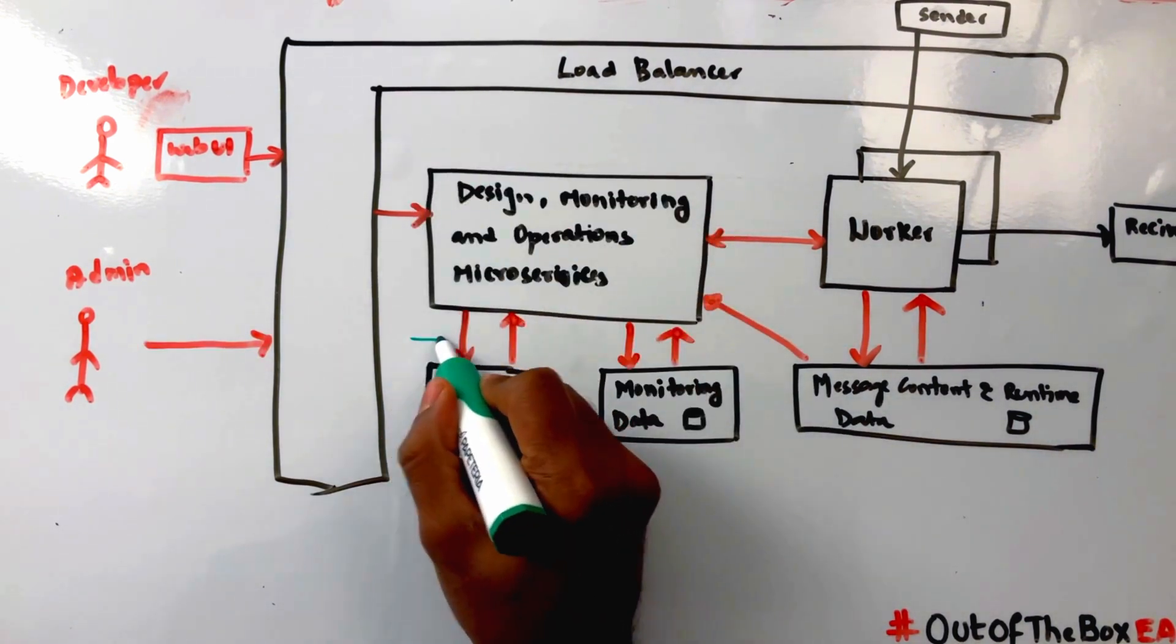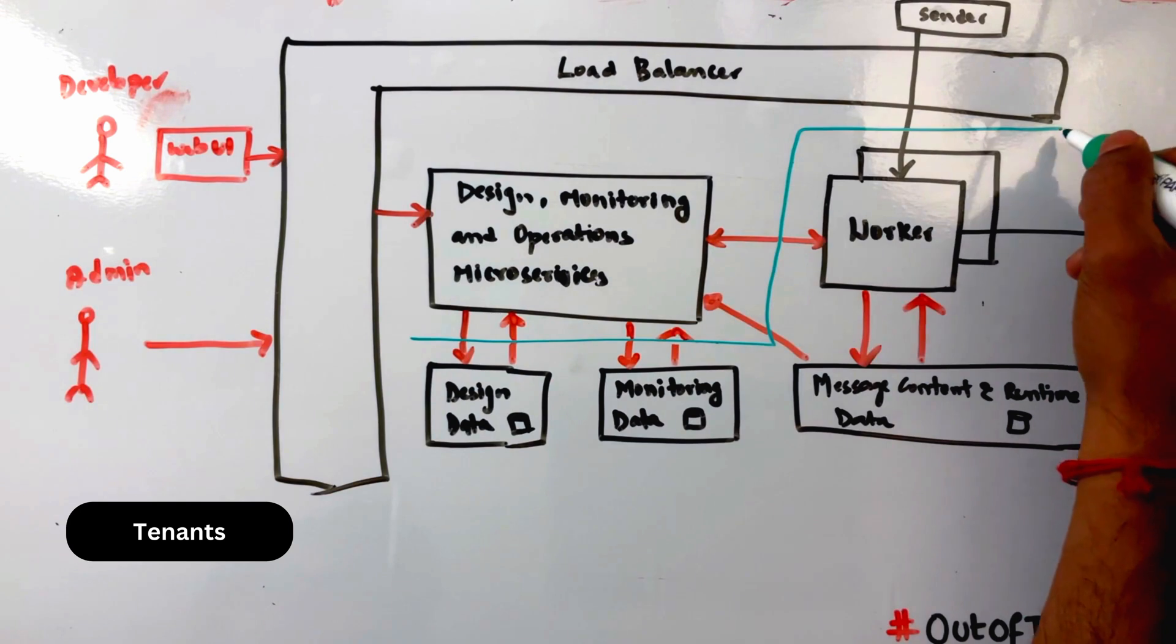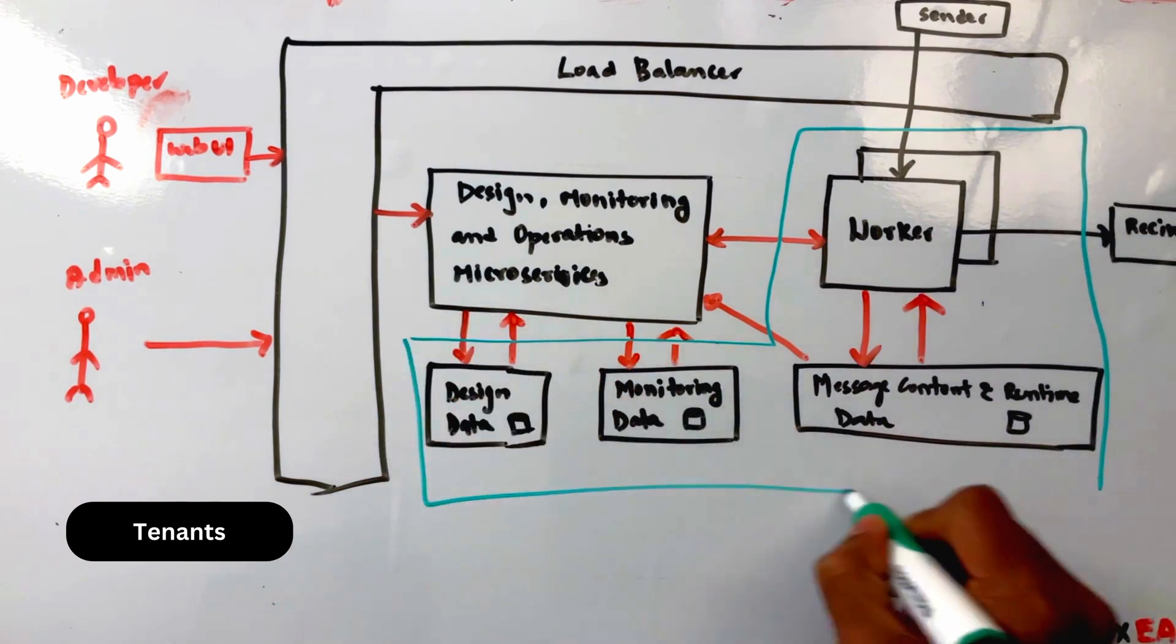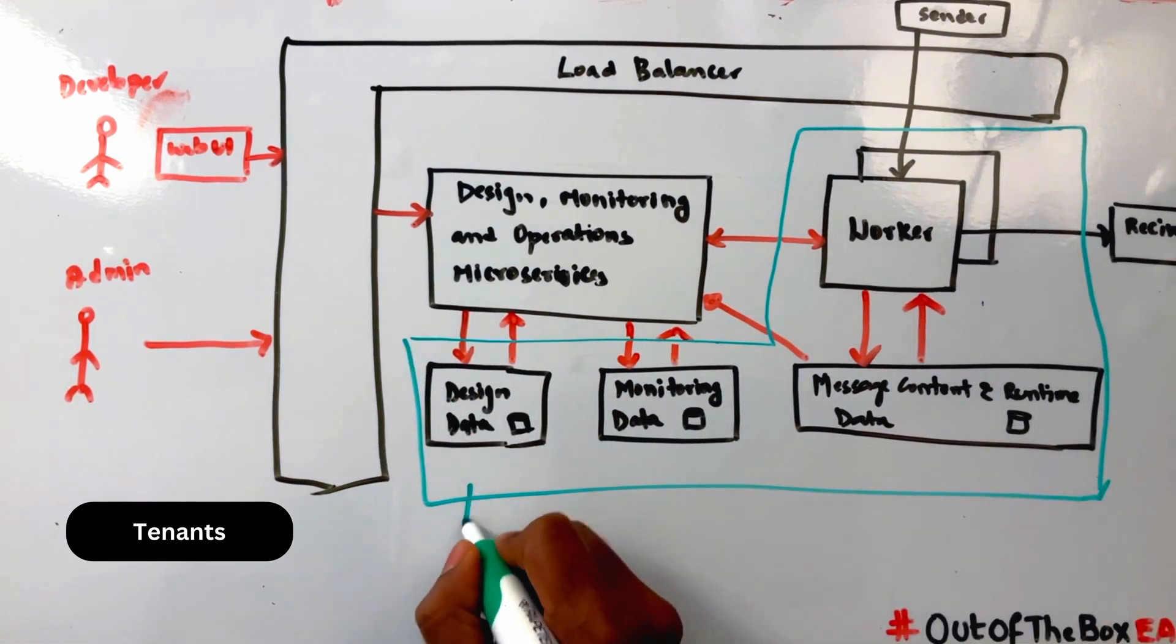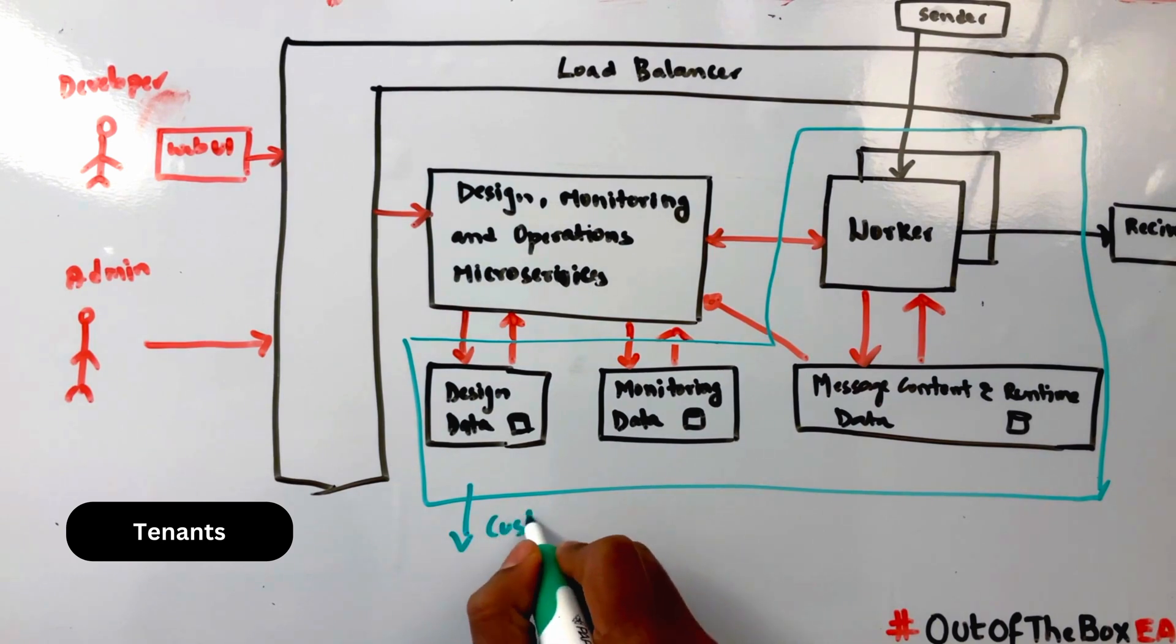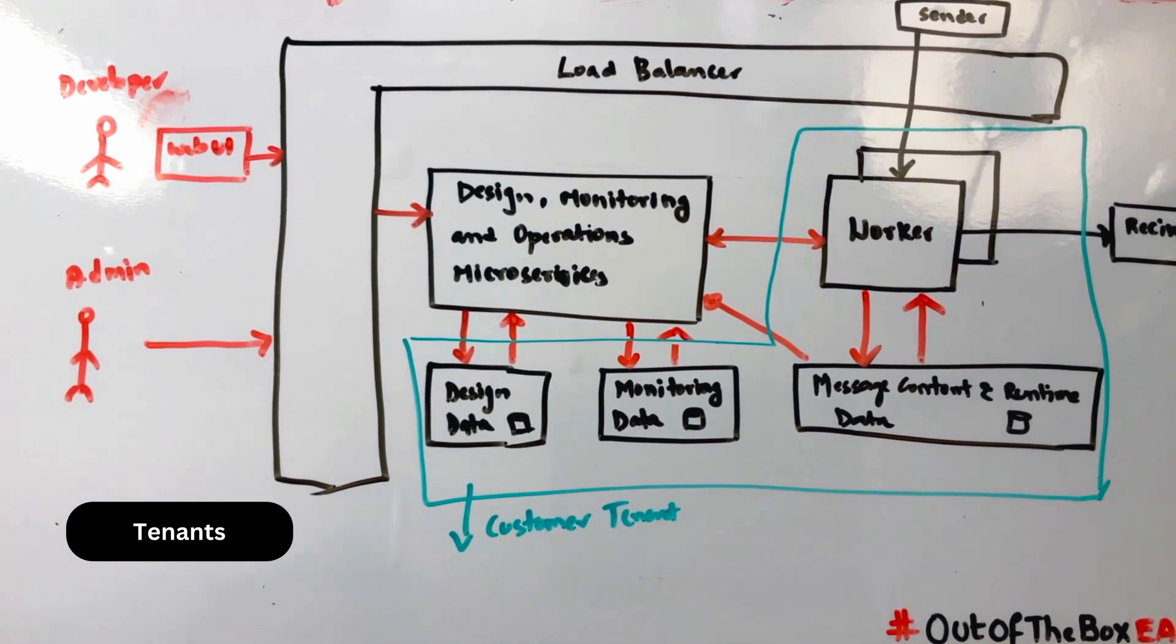In SAP CPI, customer data is protected using tenants. The monitoring data, message content, runtime data and worker processors are all part of a specific customer's tenant. This ensures their data is secure within a given tenant.